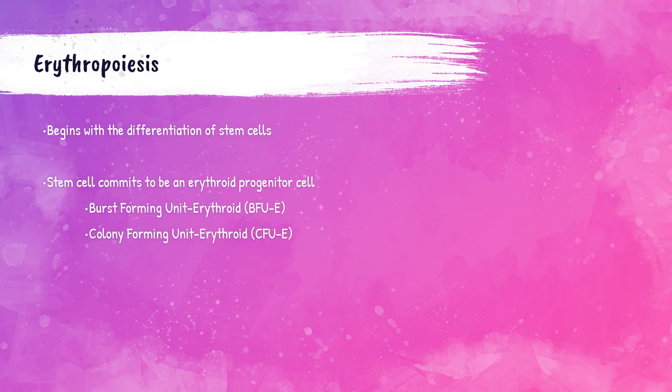Every single second the body is generating a ton of red blood cells. Erythropoiesis begins with differentiation of the multi-potential hematopoietic stem cell. The first step of this is becoming a BFUE, or burst forming unit erythroid, and then a CFUE, or colony forming unit erythroid, which we'll talk about in the next couple of slides.